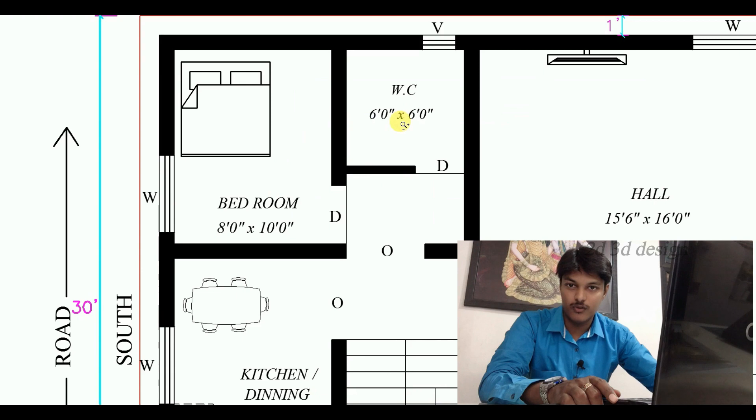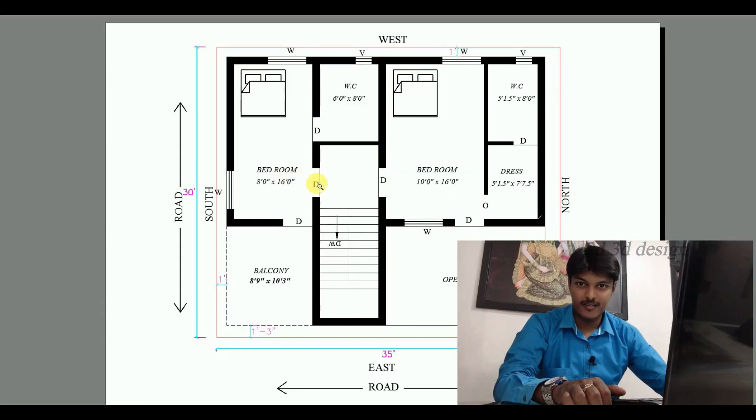This is the common toilet. This is the ground floor. The size is 6 feet. This is the first floor.